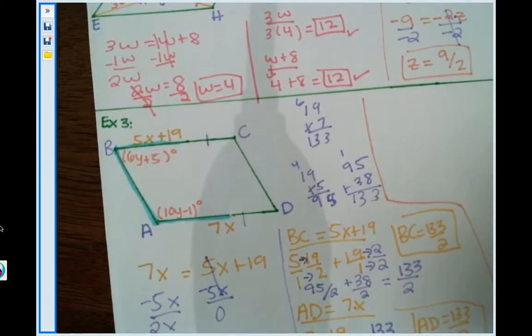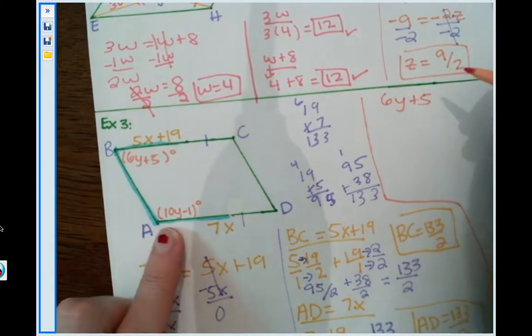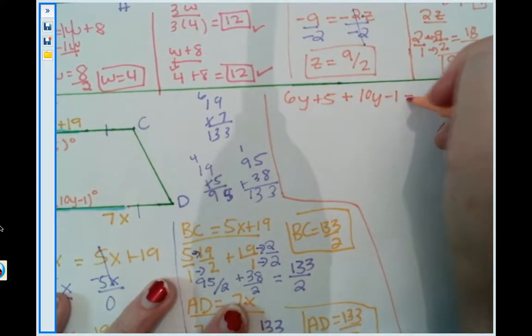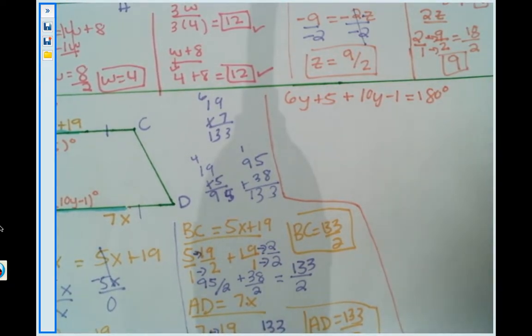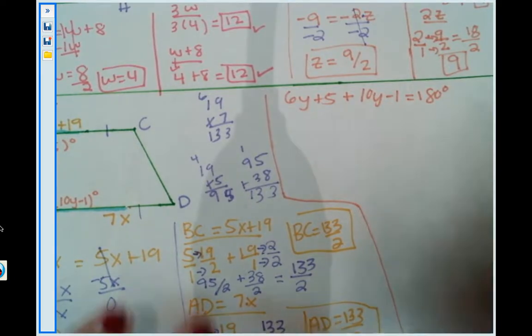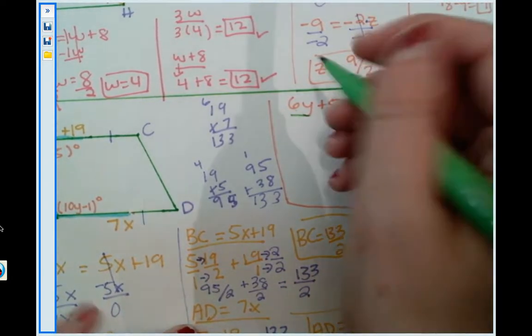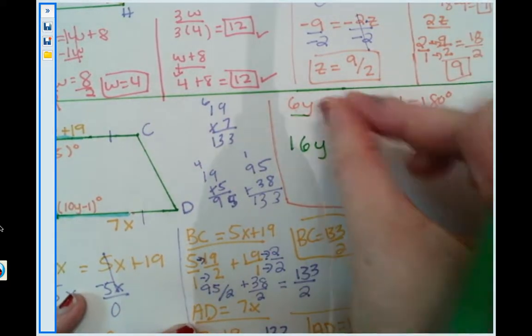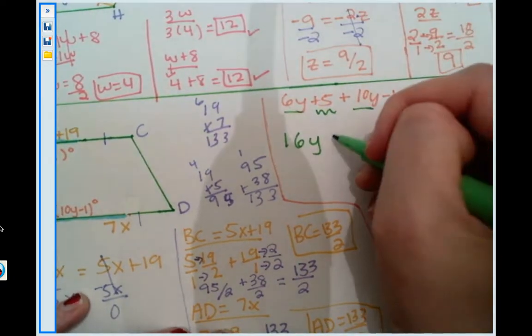So angle B is 6y plus 5. And angle A is 10y minus 1. And they're supplementary, which means they add up to be 180. Let's get going. So first, I'm going to be combining my like terms. I spot two y's, so I'm going to combine those. 6y plus 10y gives me 16y. And then I'm going to combine the numbers without the y's. So we have a 5 and a negative 1, which 5 minus 1 gives me a 4.